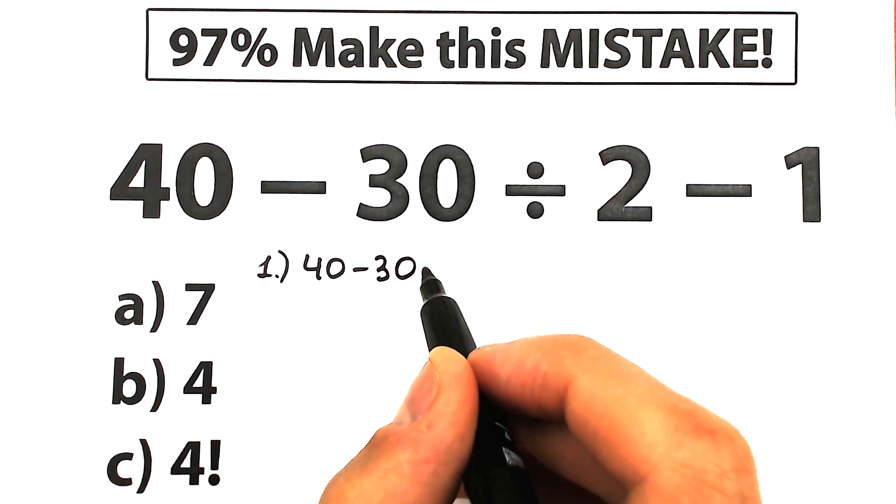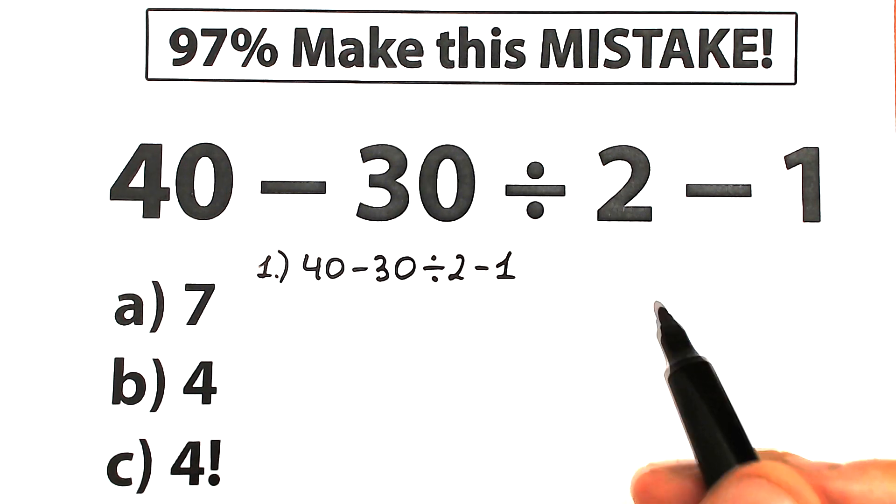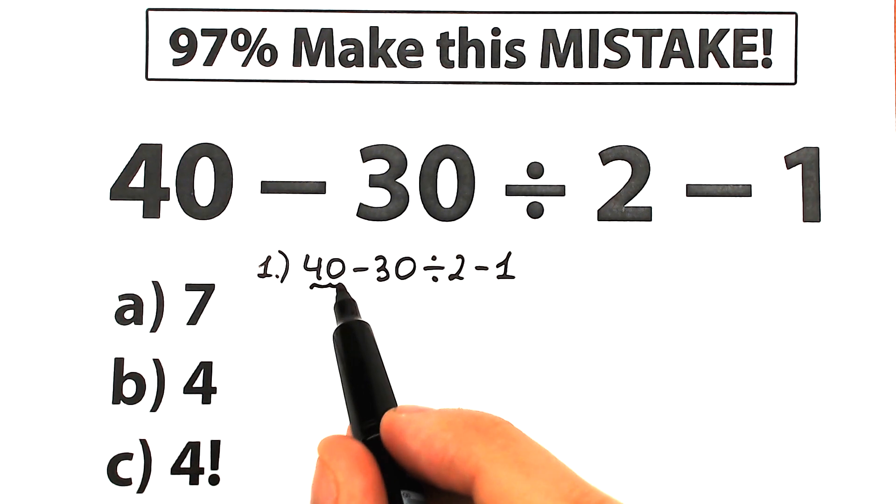We have 40 minus 30 divided by 2 and minus 1. So here's our challenge. A lot of students say, okay, from left to right, I don't care about order of operations. So 40 minus 30 equal to 10.